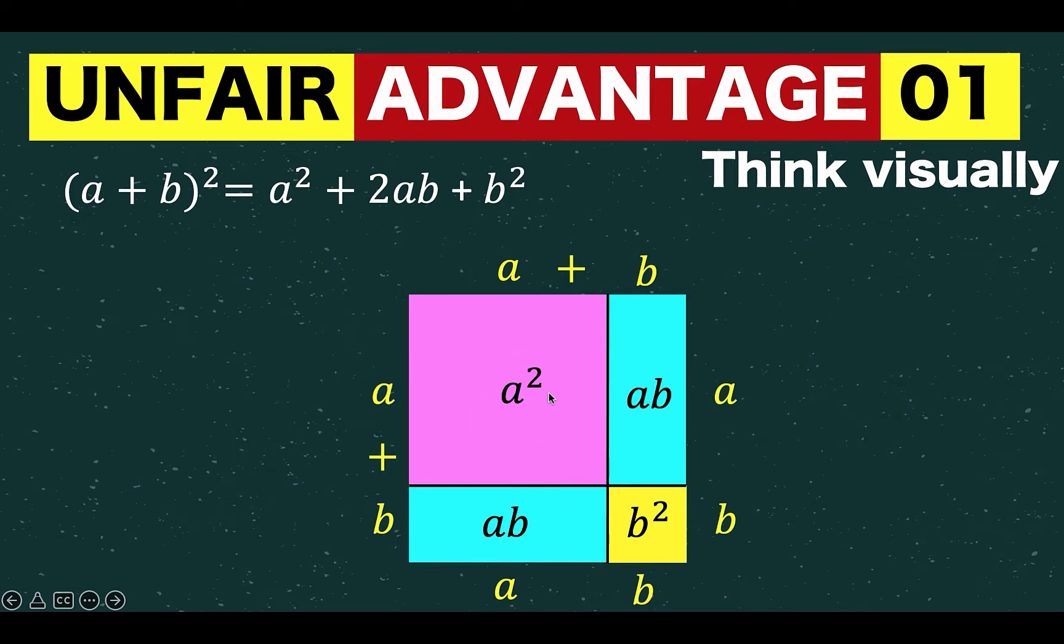The first part is this pink square with an area of a squared. The other part is this yellow square with an area of b squared. And then you have two rectangles with an area of ab. And so ab plus ab is equal to 2ab.